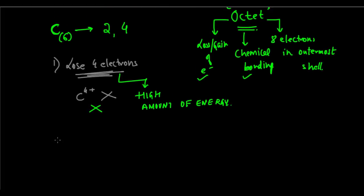Let's look at the other case. The second alternative that carbon has is to gain four electrons. But again, gaining four electrons will give it a charge of C4-, but we don't have this either.